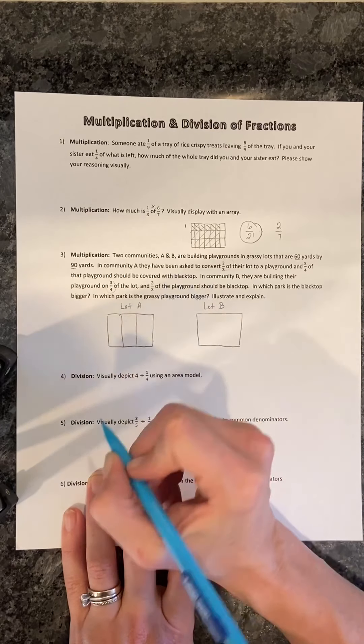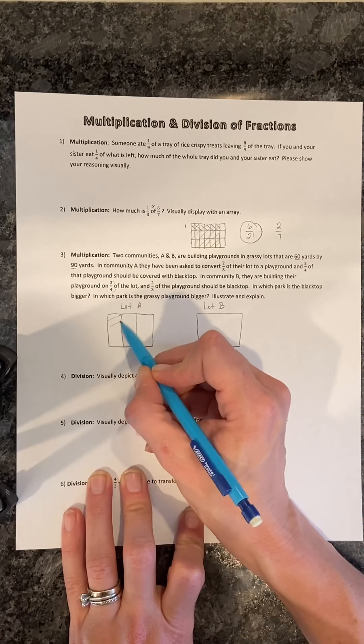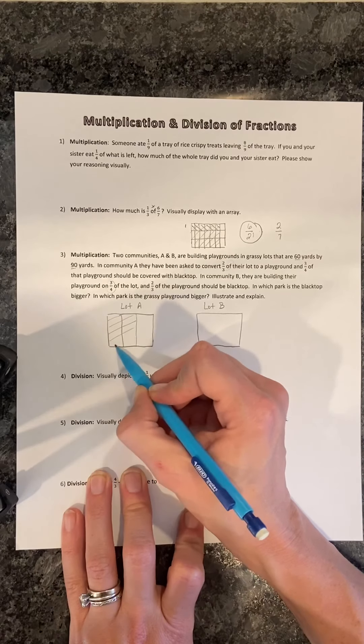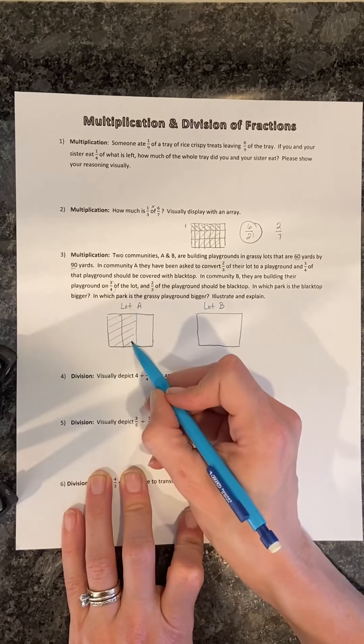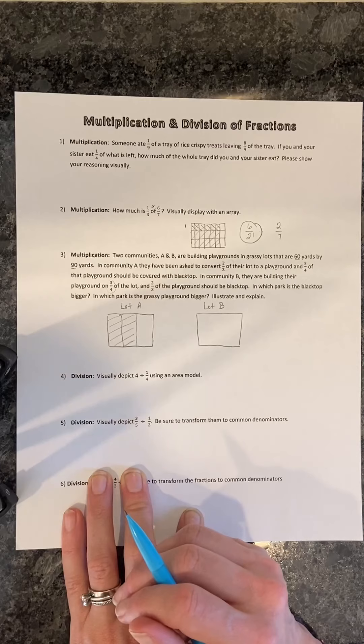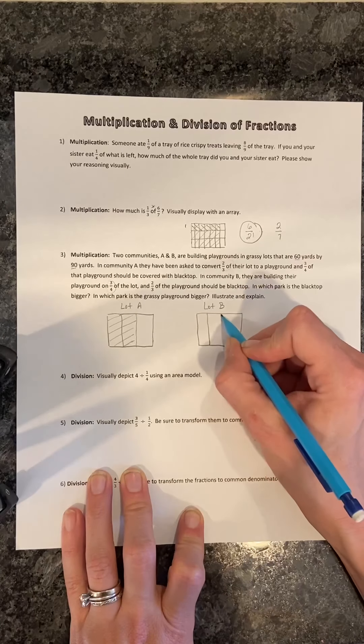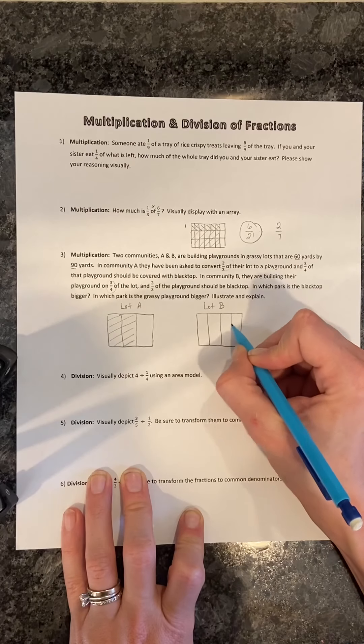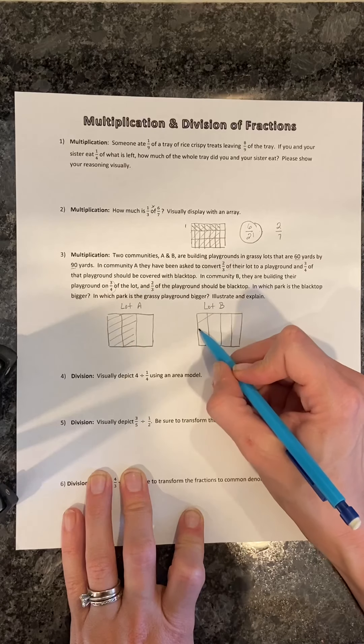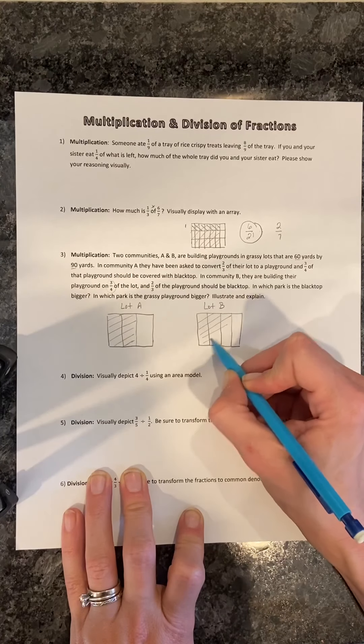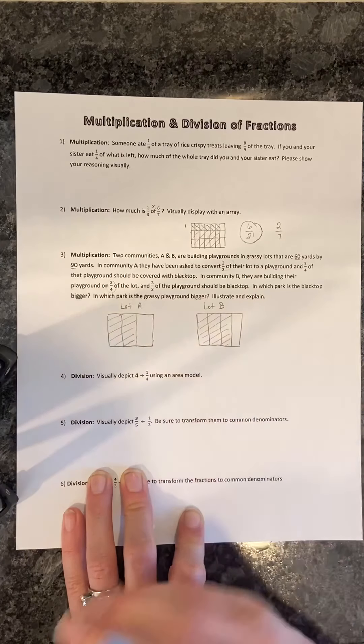So that's the first thing that we depict. We divide lot A into thirds, and we know that two-thirds of that are playground. This playground is going to be divided into two parts. A portion will be blacktopped, and a portion will be grass. Before we do that, we'll go ahead and just depict what lot B looks like in terms of the amount of space that the playground occupies. And here's lot B's, three-fourths.